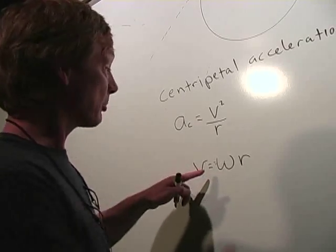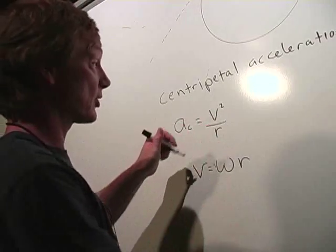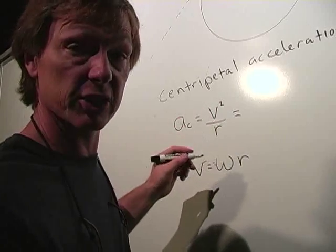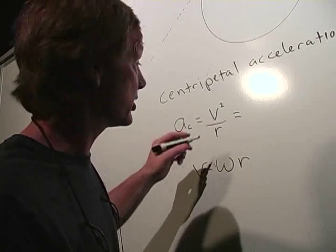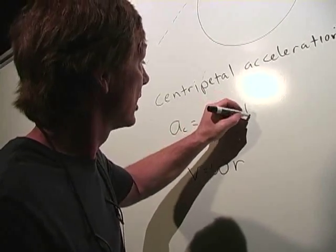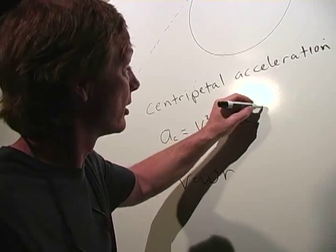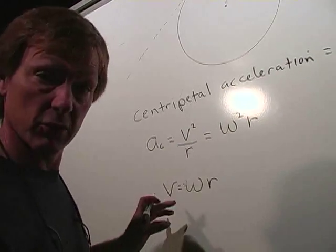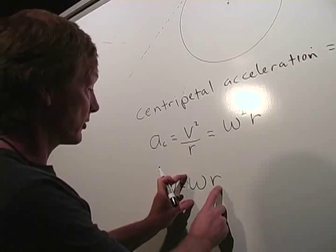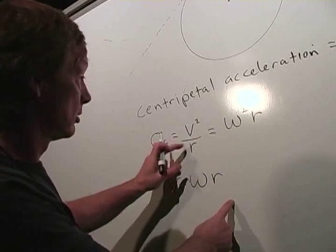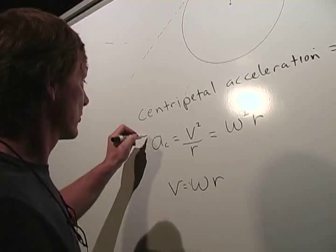So I can plug this in to this equation, and I can come up with another relationship for angular acceleration. I can say it's equal to angular velocity squared times the radius. Try the math. Just take v squared, replace it with omega r, so it'd be omega squared r squared over r. And you get this.